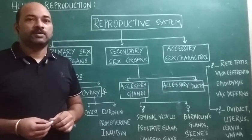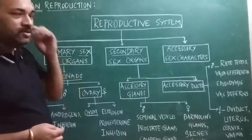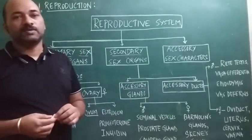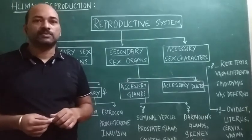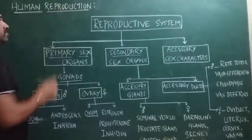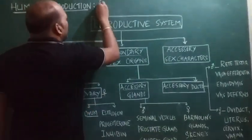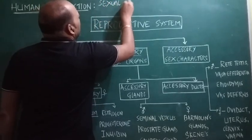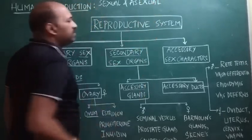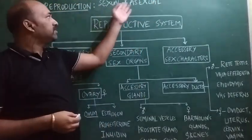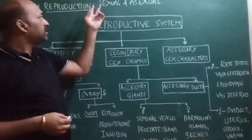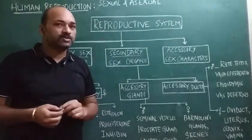Hi everyone. Today's topic is human reproduction. Reproduction is a biological process in which the parents give birth to young ones which are of the similar kind. In reproduction there are two modes: the first one is called sexual reproduction and the second one is called asexual reproduction. Generally, animals exhibit both types of reproduction, where nature favors sexual reproduction more rather than asexual reproduction.